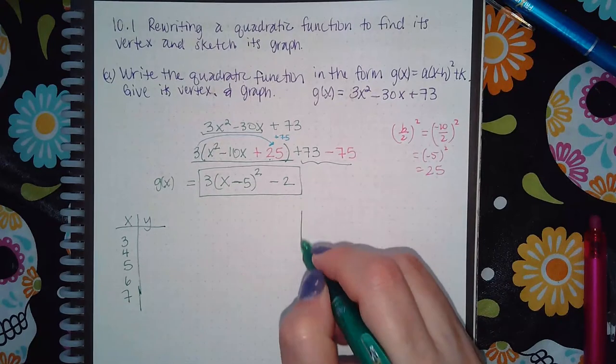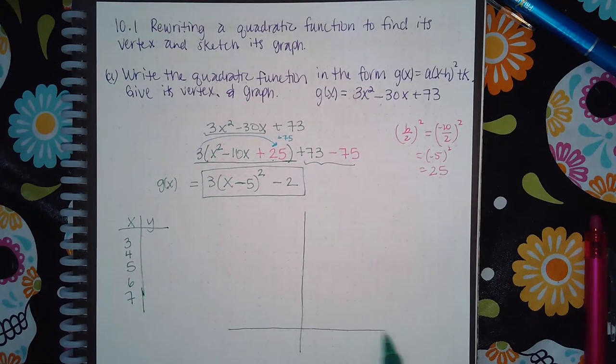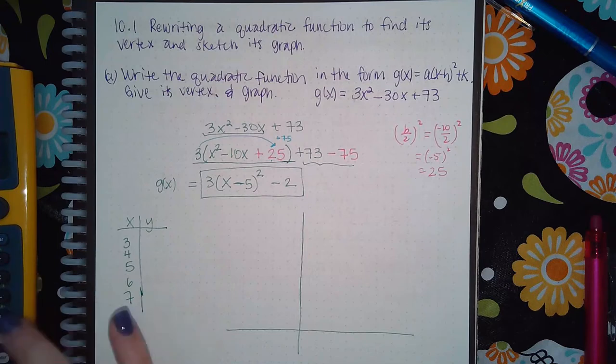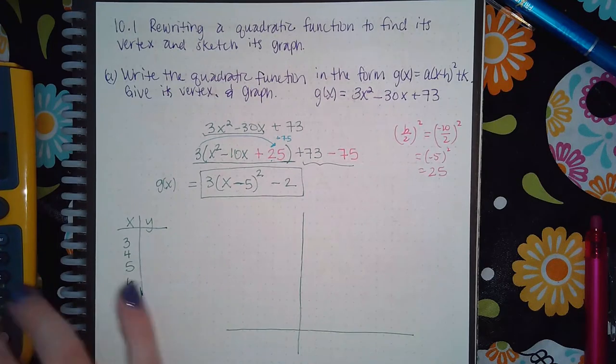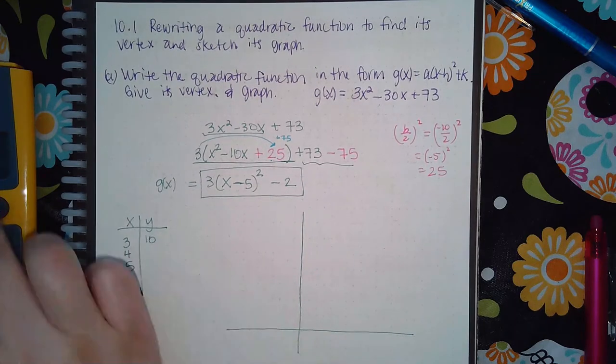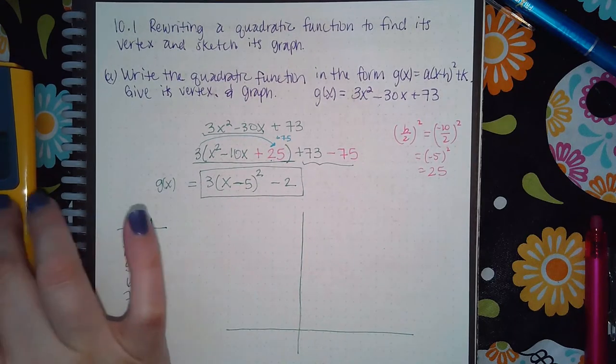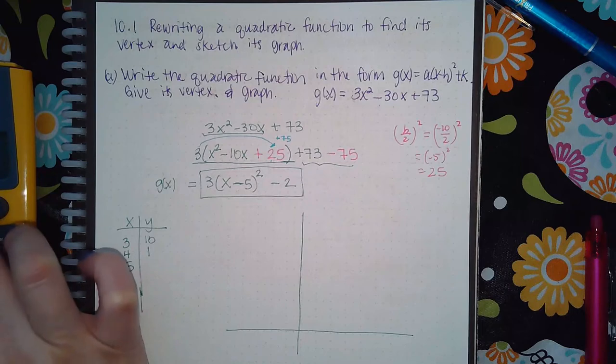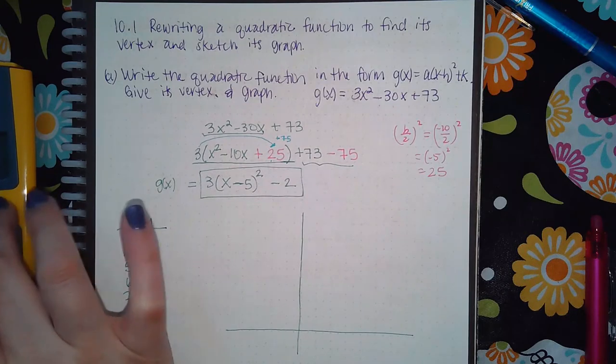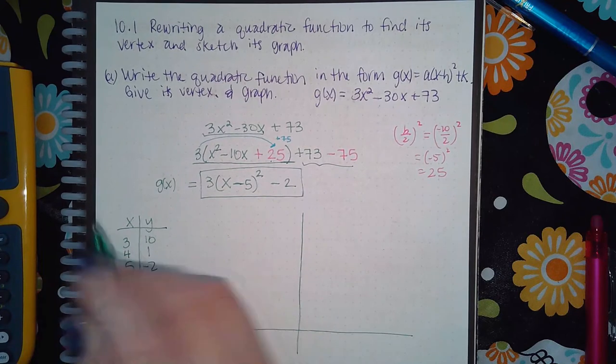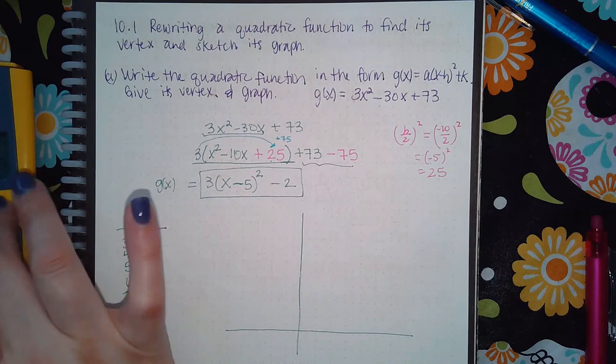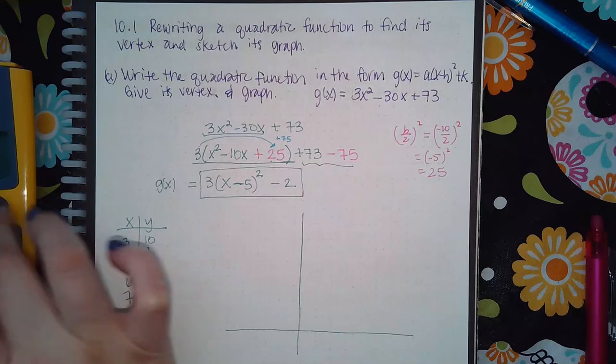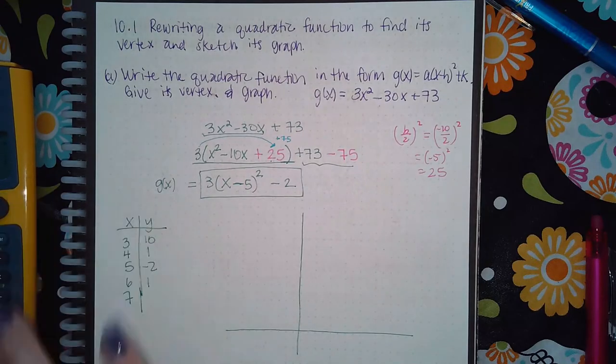Let me see: 3 parentheses 3 squared minus 30 times 3 plus 73, I get 10. Then if I go in and I plug in 4, I get 1. If I plug in 5, I get negative 2. If I plug in 6, I get 1. And just to be sure, if I plug in 7, should I get 10? Yes, I get 10.